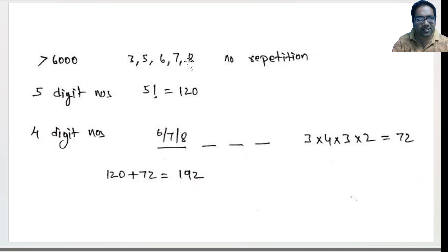And 4 digit numbers which start with 6, 7, or 8 - first digit is 6, 7, 8, remaining 3 can be anything.